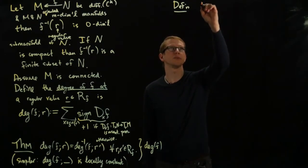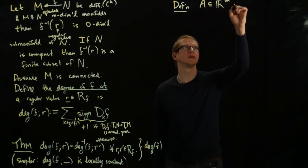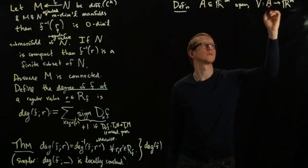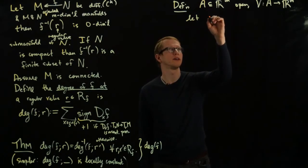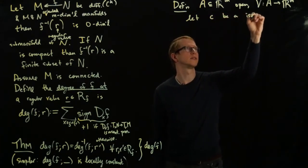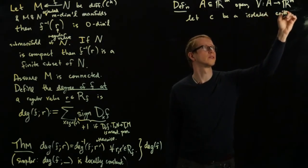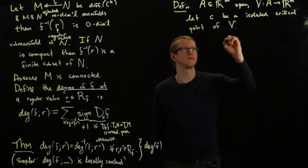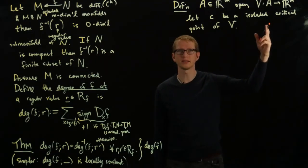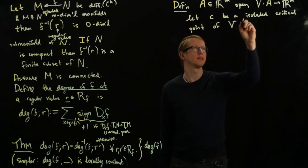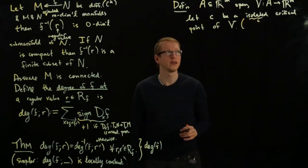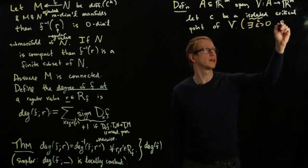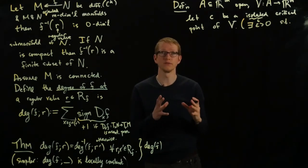So let's suppose we have an open subset of R^M and a vector field on A. And let C be an isolated critical point of the vector field V. So I should actually say what I mean by isolated critical point here. By isolated,